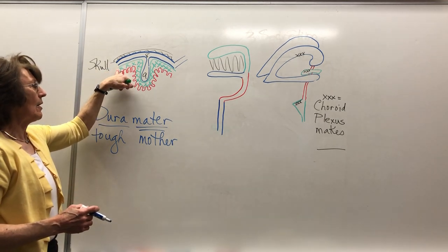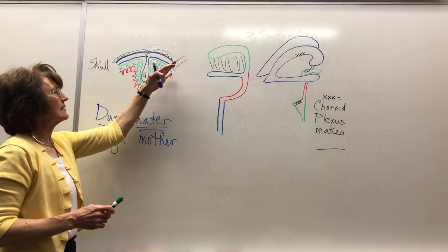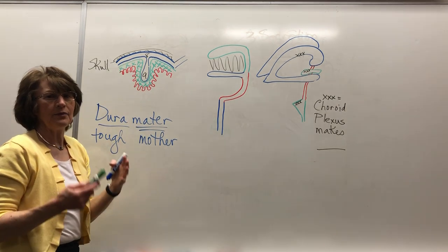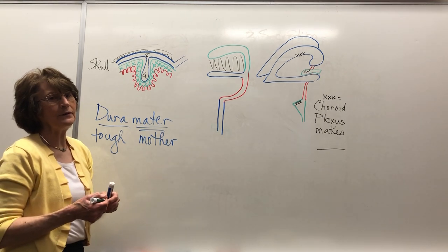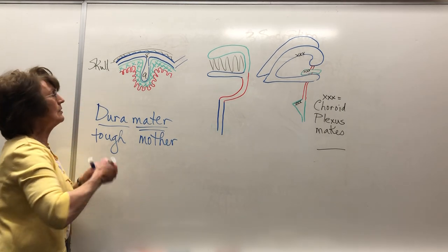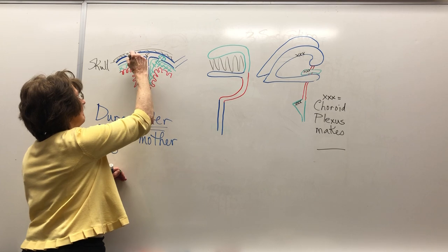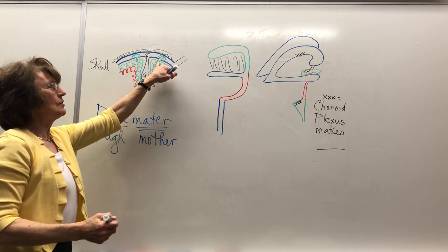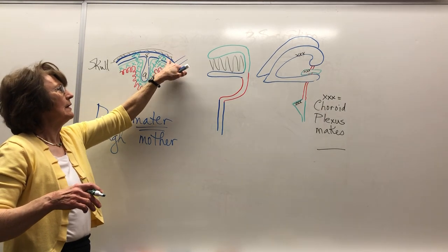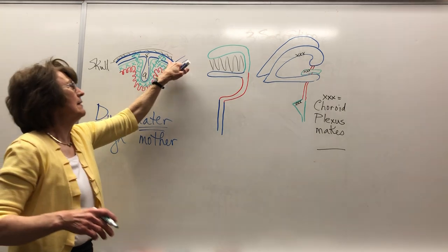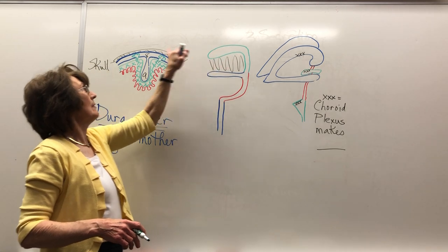The next one we've got is the arachnoid mater. Arachnoid means spider web, and you can see the X kind of webbing shape that's there. That's where the cerebrospinal fluid is. We're going to see how the cerebrospinal fluid gets back into the bloodstream. On your diagram, you can see the arachnoid granulations — they reabsorb the cerebrospinal fluid into the sinus, which is the bloodstream.